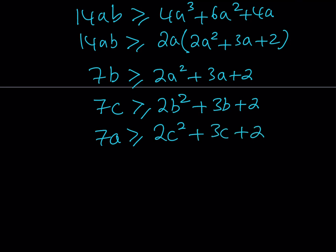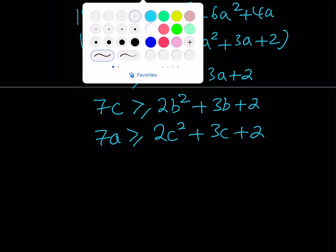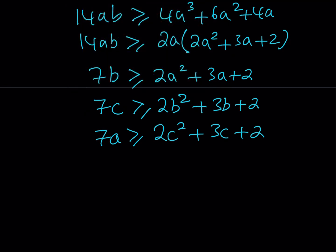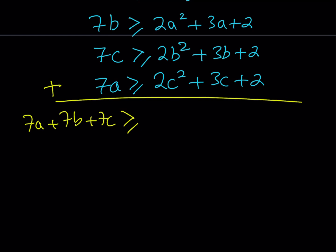Great. So, after all these manipulations, we are getting these inequalities, which is kind of nice. But it's still not very nice, so we have to make it nicer. How do you make it nicer? We can add these inequalities. Let's go ahead and add them up. And when you do, some of the terms are going to simplify. We'll bring them together, so on and so forth. So we get 7a plus 7b plus 7c is greater or equal to 2 times a squared, b squared, c squared. And then 3a, 3b, 3c. And then plus 6.